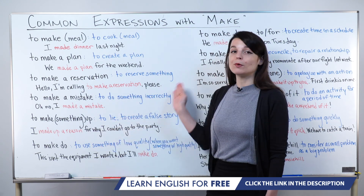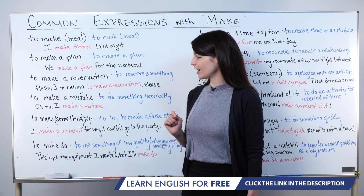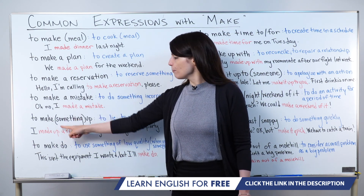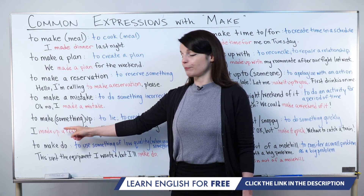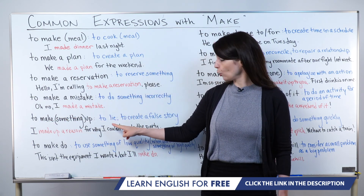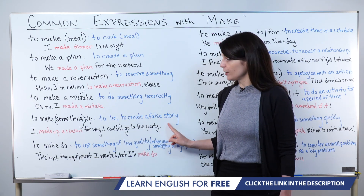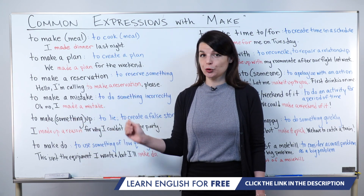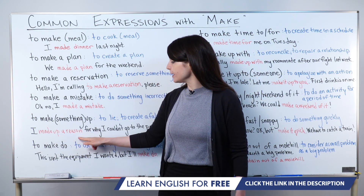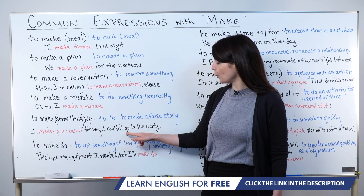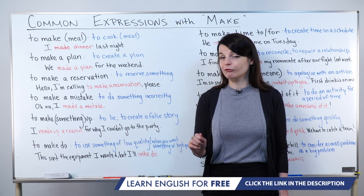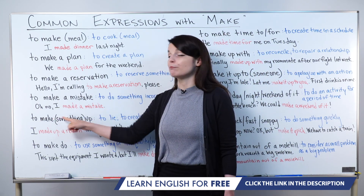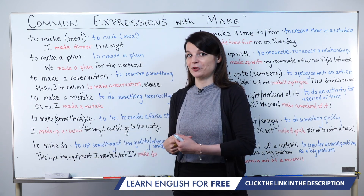Let's move on to some more advanced expressions that use 'make.' This one is to make something up. There is some other information in the sentence — this expression means to lie or to create a false story. This 'something' is something that is not true. For example: I made up a reason for why I couldn't go to the party. 'Let's make something up' means let's create something that's not true — let's make a lie, let's create a lie.